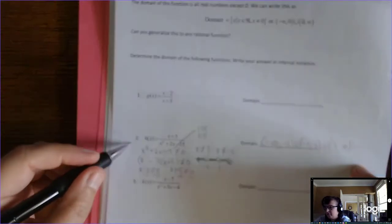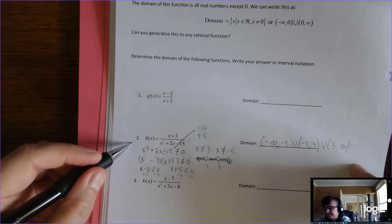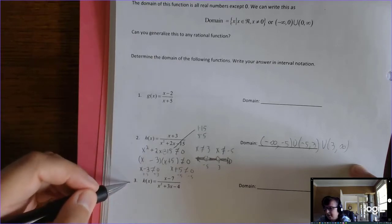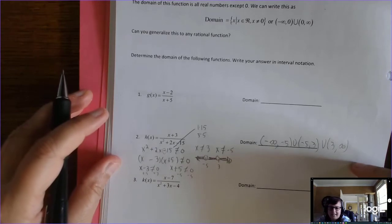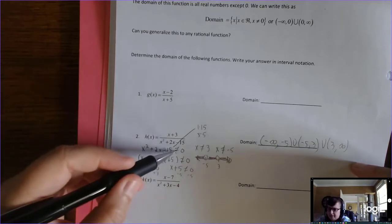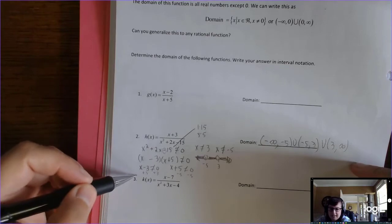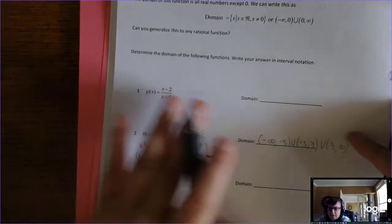So I just wanted to do one more with you. You can try 3. Same thing, it's a quadratic. You've got to know how to solve a quadratic equation. It has to be set equal to zero, and you factor, and you set each factor equal to zero.